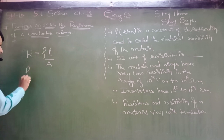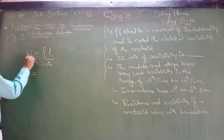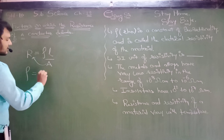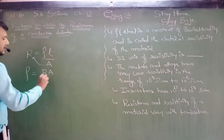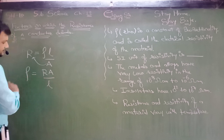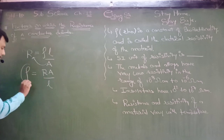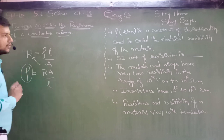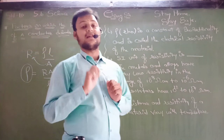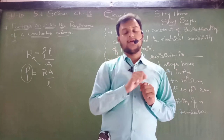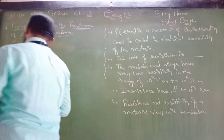If I need the value of rho, then rho will be R times A divided by L. This rho is known as, dear students, resistivity. Rho is resistivity.